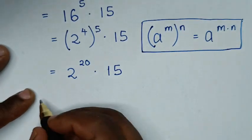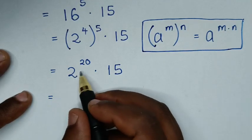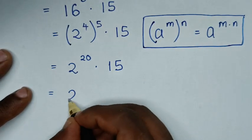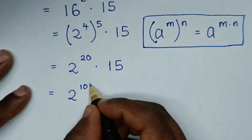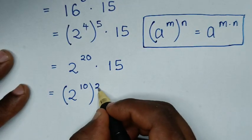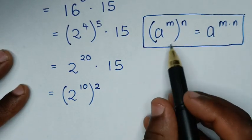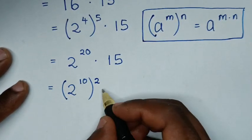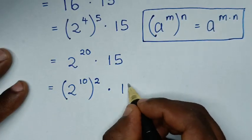In the next step, it will be equal to: from 2 power of 20, it is the same as 2 power of 10, bracket power of 2, outside the bracket. Whereas we apply this form, then times 15.